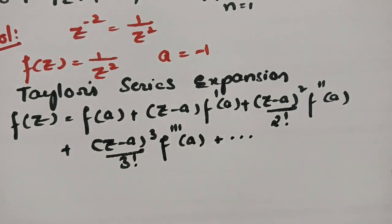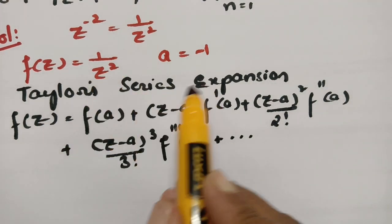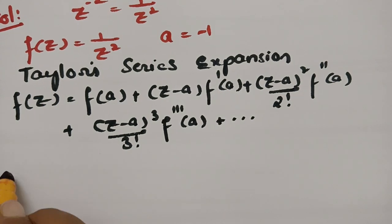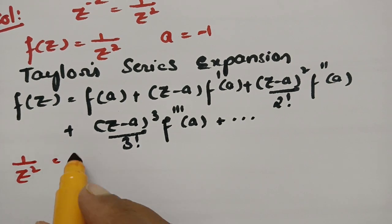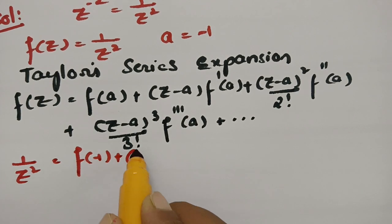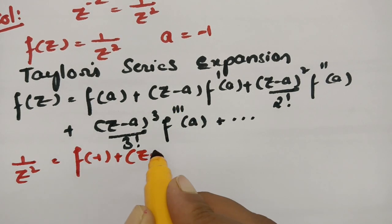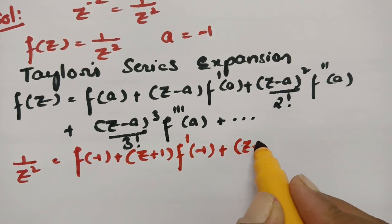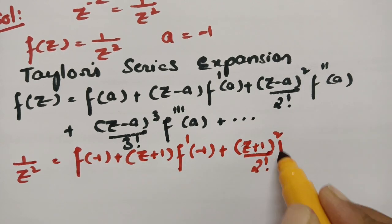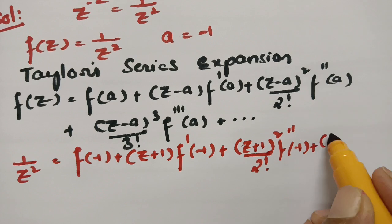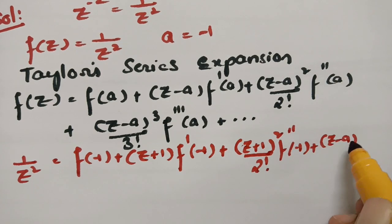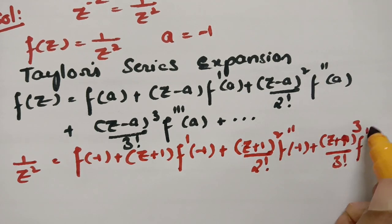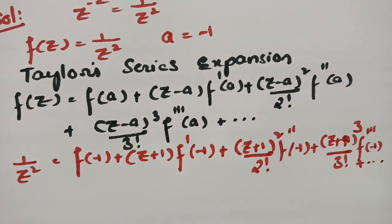So here if I substitute f(z) as 1/z² and a as minus 1, this will become: 1/z² equals f(−1) plus (z+1) times f'(−1) plus (z+1)² divided by 2 factorial times f''(−1), plus (z+1)³ divided by 3 factorial times f'''(−1), and so on.